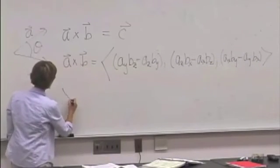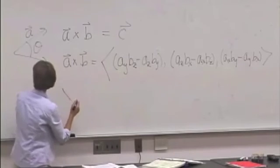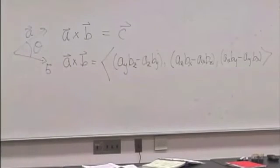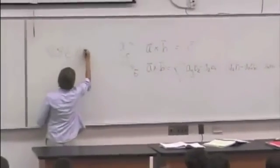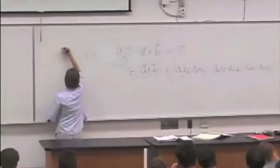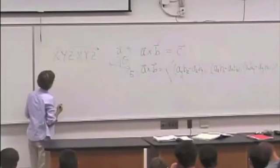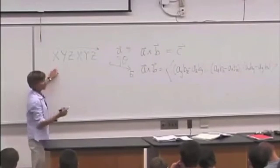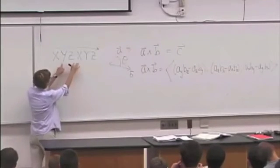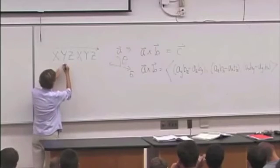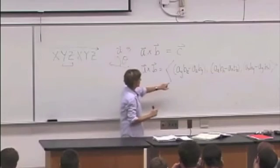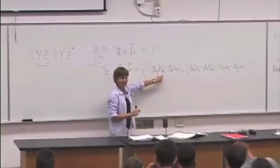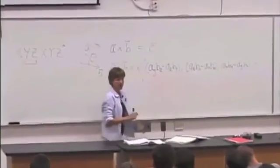Well, the usual mnemonic is to do this. You write x, y, z, x, y, z, with an arrow going to the right. And the way you interpret this is the following. If you want the x component, what are the next two things? Y and Z. So the x component starts out yz minus zy.